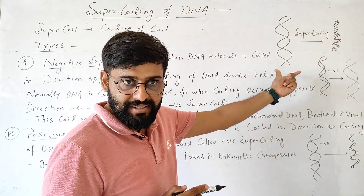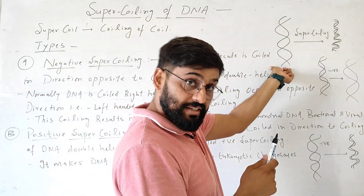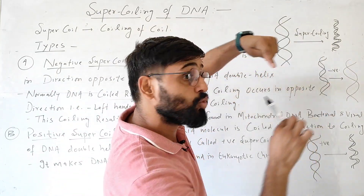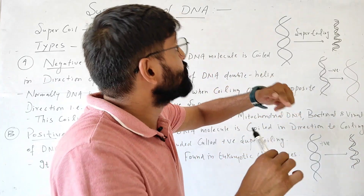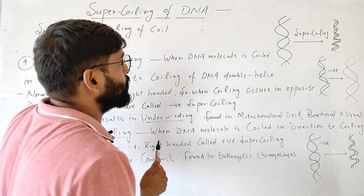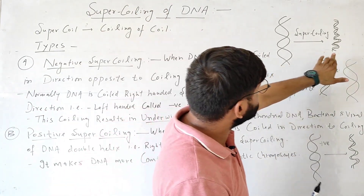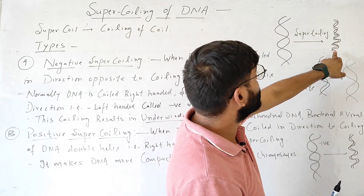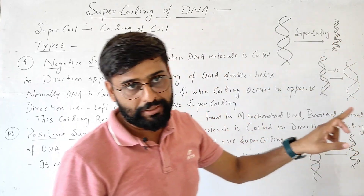We know that DNA is double-stranded and the two strands are coiled around each other. In this you can see that there are two strands and these two strands are coiled around each other. When these two strands further coil, then it is called supercoiling. So these are in a relaxed state, but when they further coil, you can see that it becomes more compact. So this is called supercoiling.